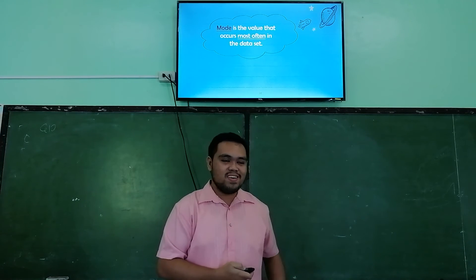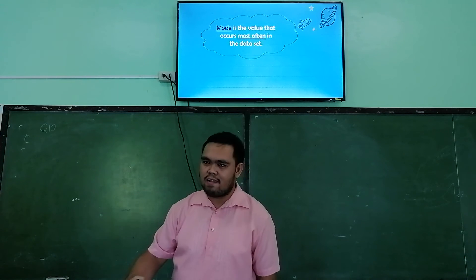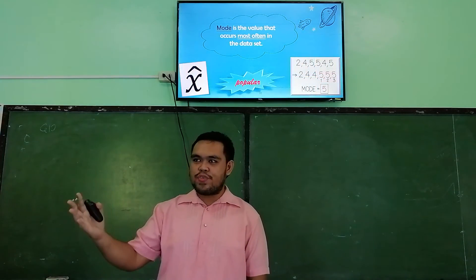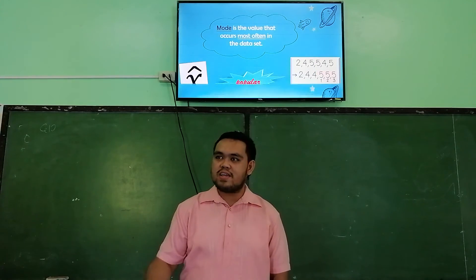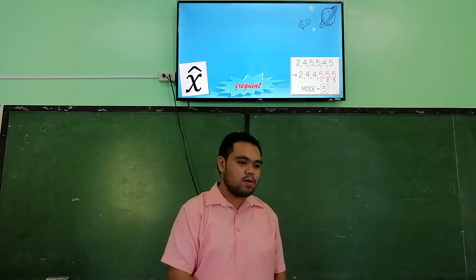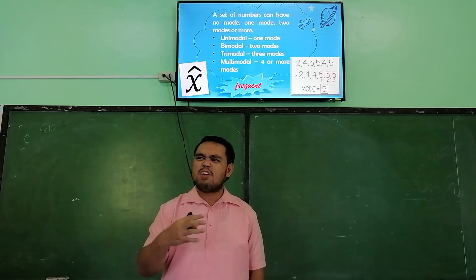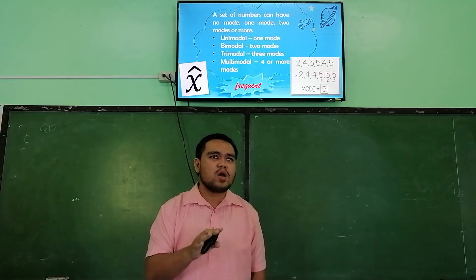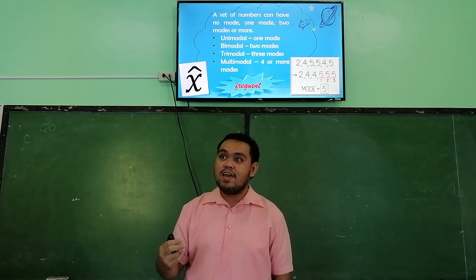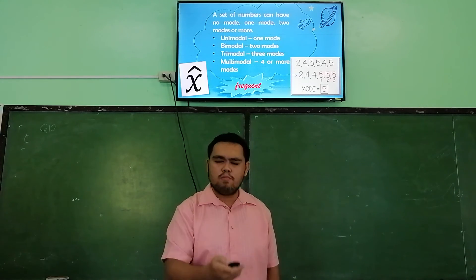Next is the mode. When we talk about mode, think of the most often or most frequently repeating data — or think of the word popular, like popular artists. There are types of modes: a set of data can have no mode, or it can have multiple modes. If there is only one mode, it is unimodal. Two modes is bimodal. Three modes is trimodal. Four or more modes is multimodal.